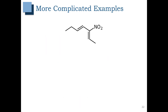Let's look at some more complicated examples. For this molecule, let's talk about how we would do our numbering. If we number from the left — one, two, three — we will have our double bond at position three. If we number from the right — one, two — we will have our double bond at position two. Two is better than three, so we're going to number from the right. We have seven carbons in our parent chain, giving us a heptane. At carbon two, don't forget that we have a hydrogen attached there, so let's draw that in.